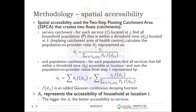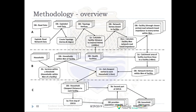As the accessibility index AI increases, the accessibility for the household also increases. Overall, that covers parts A, B, and C of the methodology, with the output being the accurate spatial accessibility representation.